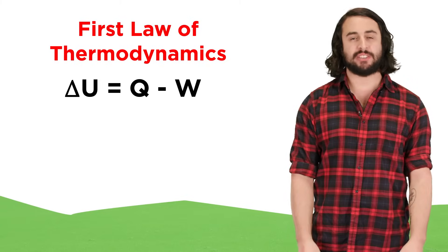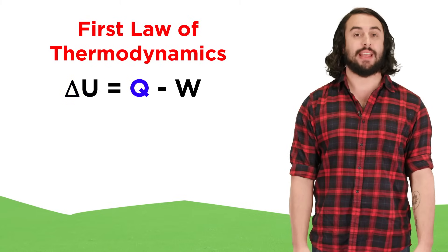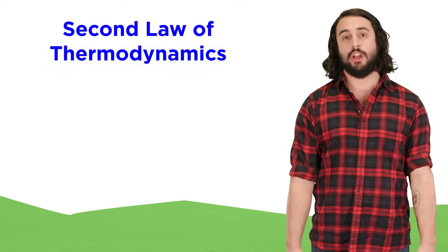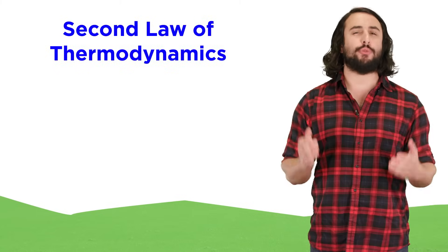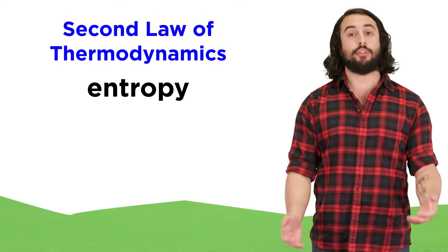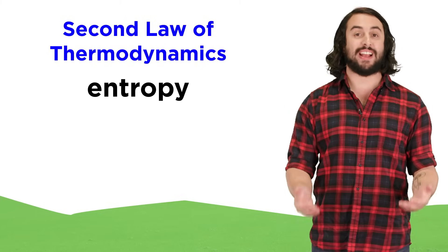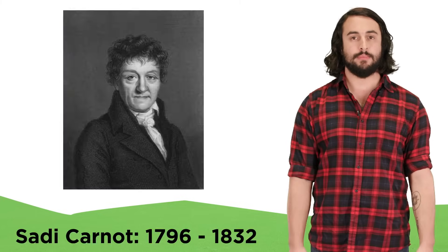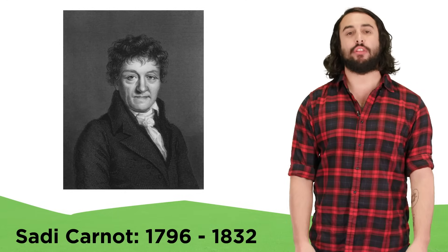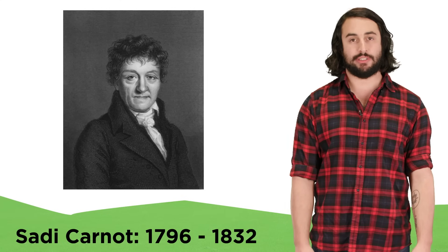The first law of thermodynamics told us about the relationship between internal energy, heat, and work. The second law will introduce one of the most confusing concepts in physics, entropy. Let's go through this law and examine how the concept of entropy was derived as a result. The second law came about through the work of a fellow named Sadi Carnot and his study of heat engines.